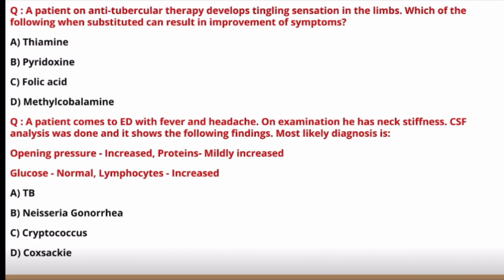Going back to the question: opening pressure increased, proteins mildly increased, glucose normal, lymphocytes increased. Lymphocytes can be increased in TB, Cryptococcus, and Coxsackie — bacterial is ruled out. Proteins are only mildly increased and glucose is normal, ruling out TB (where proteins are very high and glucose always low). For fungal, glucose should be low. Best answer is Coxsackie virus, consistent with viral meningitis.